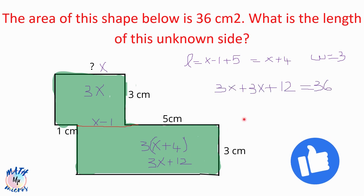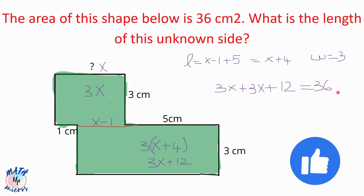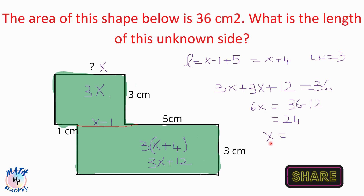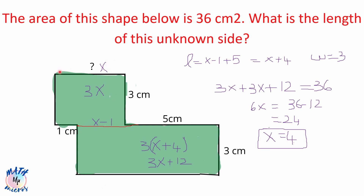Adding the area of the first rectangle (3x) and the bigger rectangle (3x + 12) together equals 36. Simplifying: 3x plus 3x is 6x, plus 12 equals 36. Moving 12 to the other side: 6x equals 36 minus 12, which is 24. So x equals 4, since 6 times 4 is 24. We have found the unknown side x equals 4.